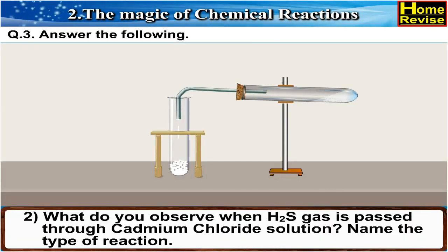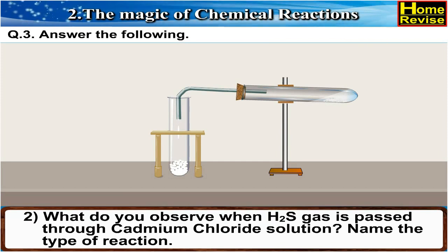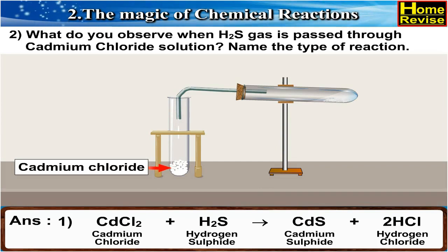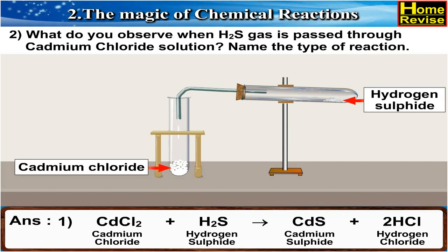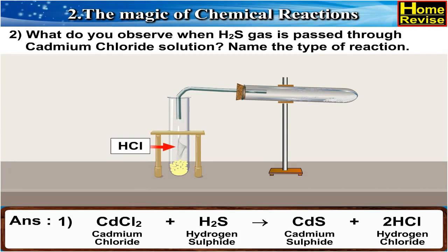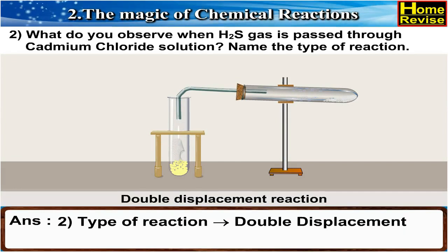2. What do you observe when hydrogen sulfide gas is passed through cadmium chloride solution? Name the type of reaction. Answer: CdCl2 (cadmium chloride) + H2S (hydrogen sulfide) gives CdS (cadmium sulfide) + 2HCl (hydrogen chloride). The type of reaction is double displacement.